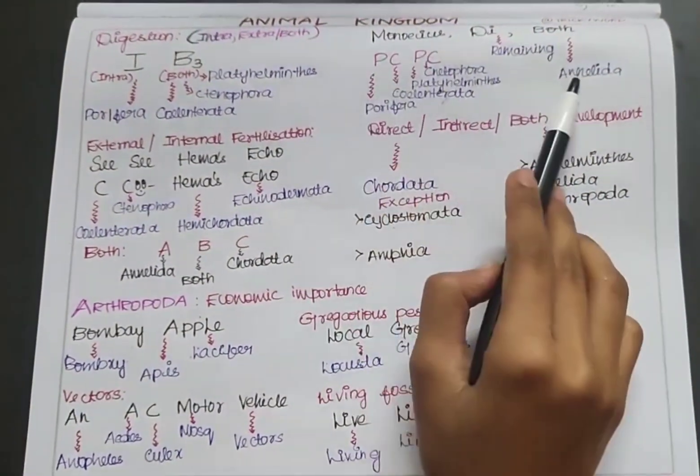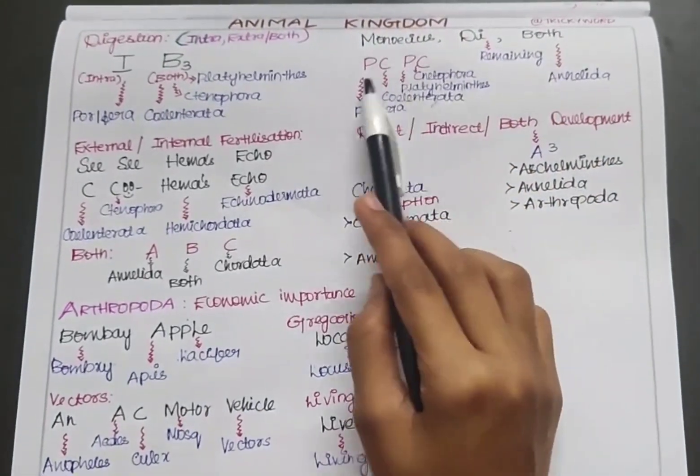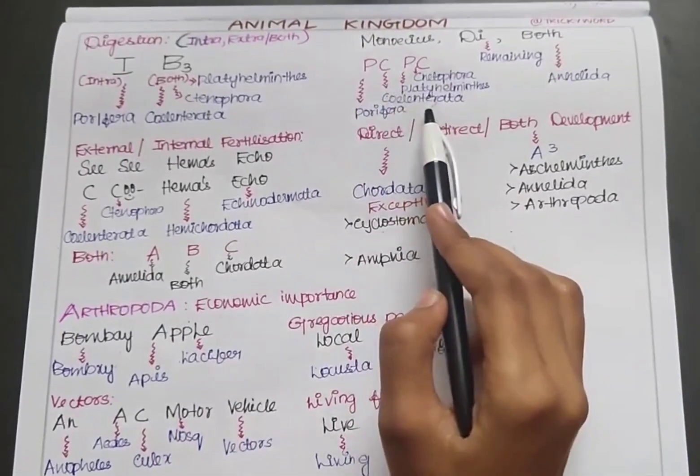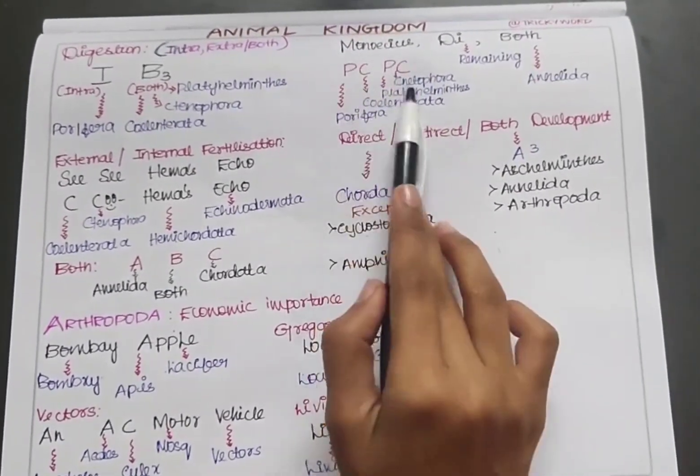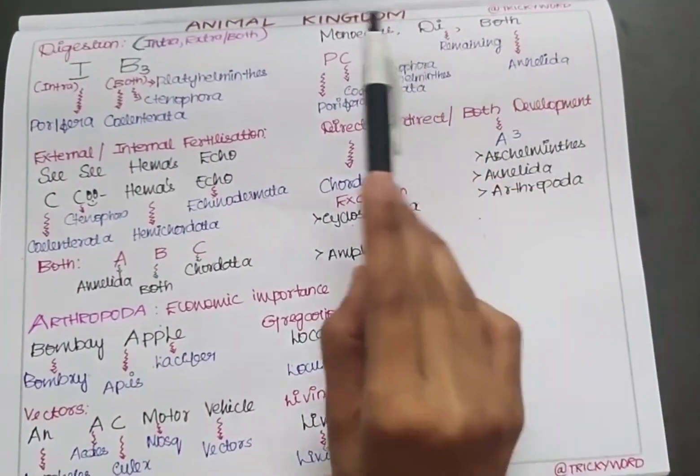Now to talk about whether organisms are monoecious, dioecious, or both. Monoecious is given by PC PC: P for Porifera, C for Cnidaria, another P for Platyhelminthes, and C for Ctenophora. Monoecious is PC PC, and both is shown by Annelida.